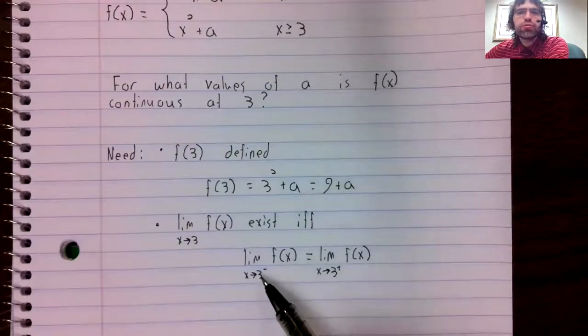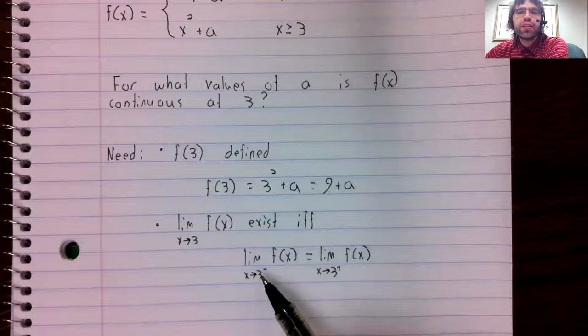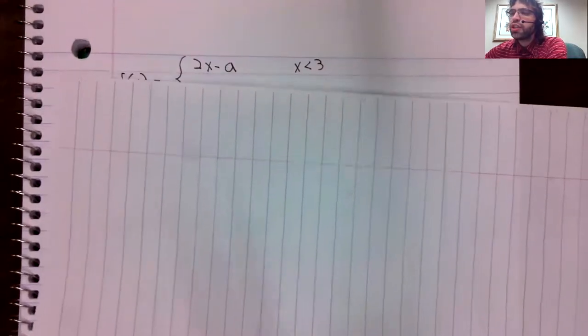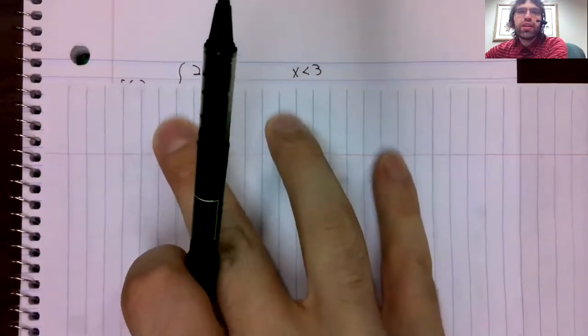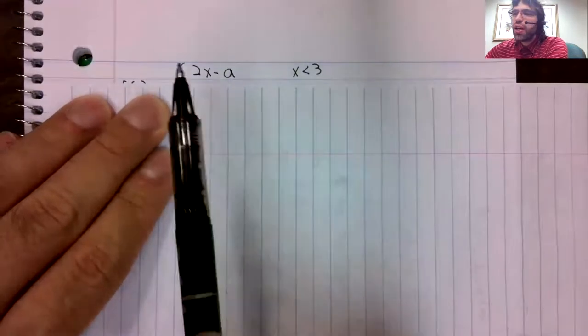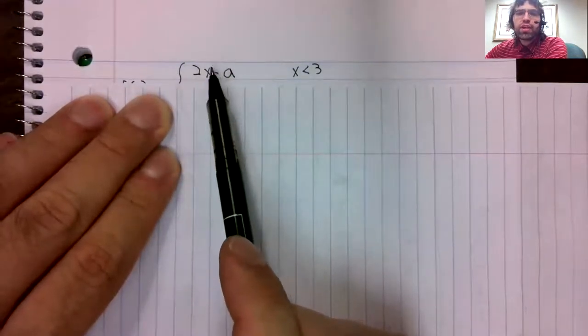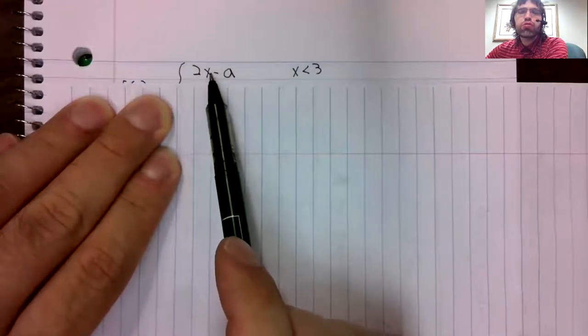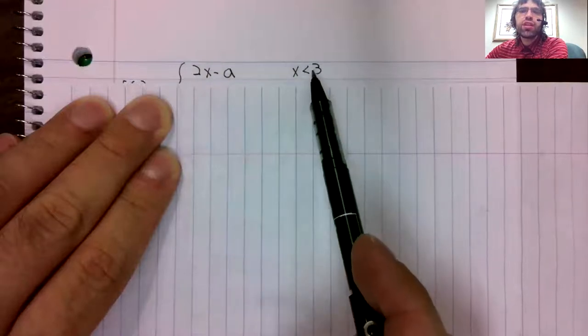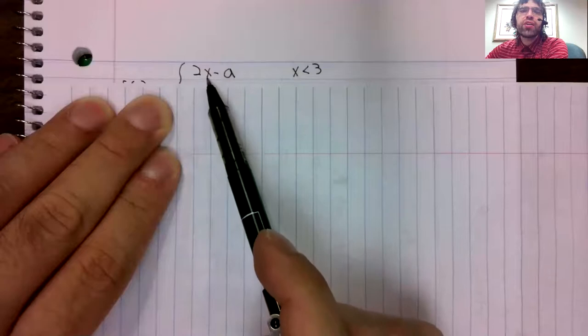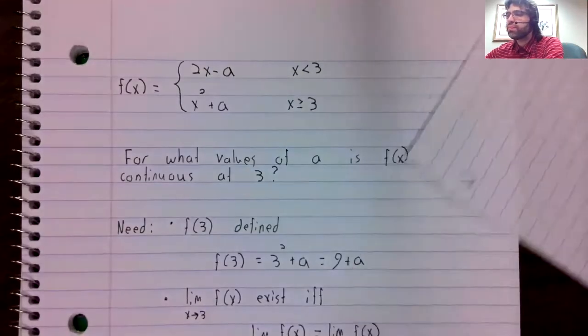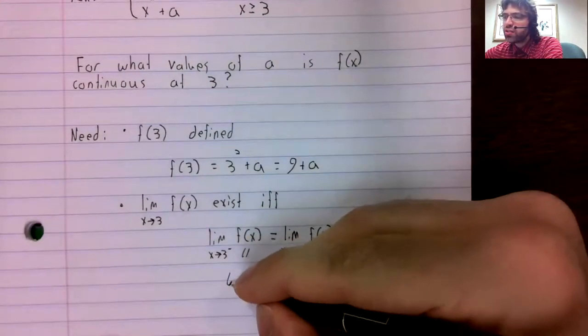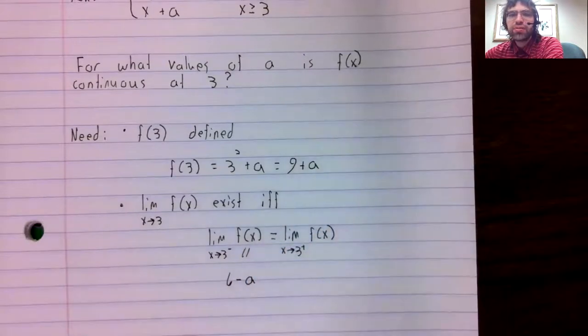What happens as we approach three from the left? Well, if we're to the left of three, we are in this piece. And this is a polynomial, it's continuous. So to compute the limit as x approaches three of this, we just take three and stick it in, and we get six minus A.